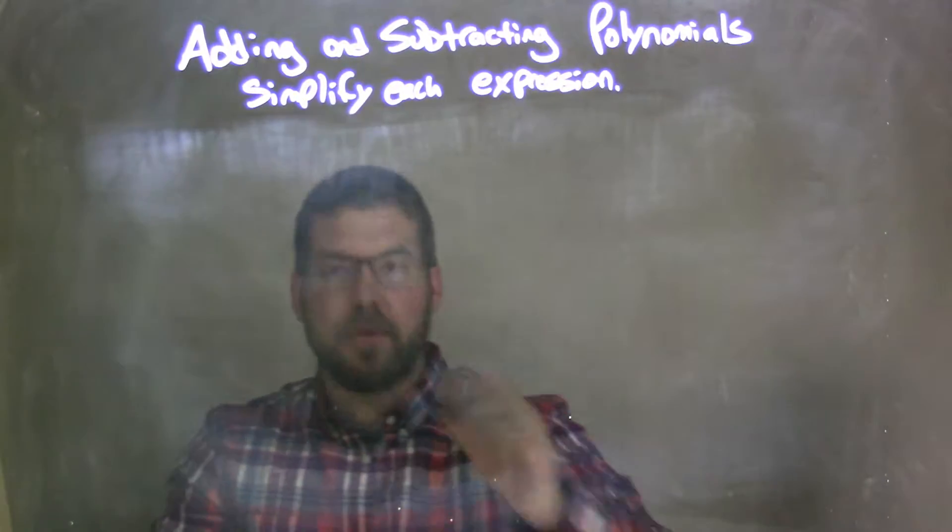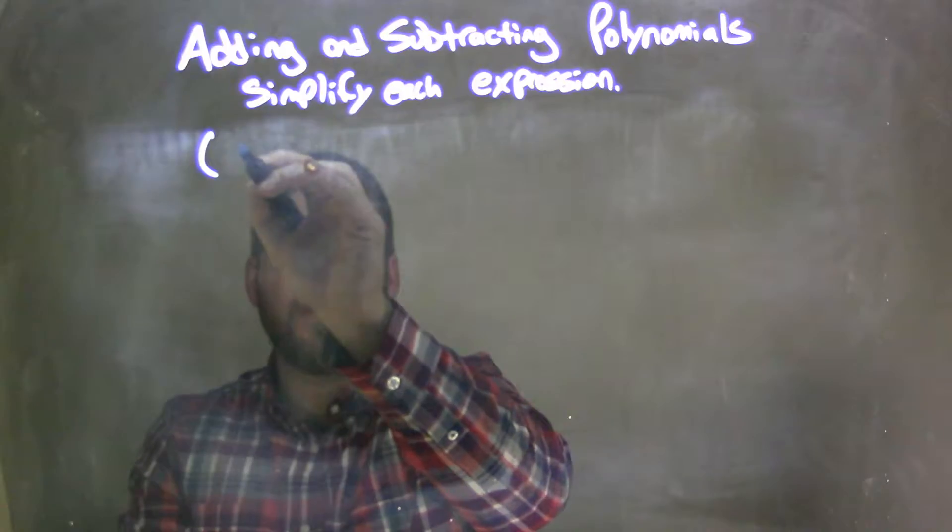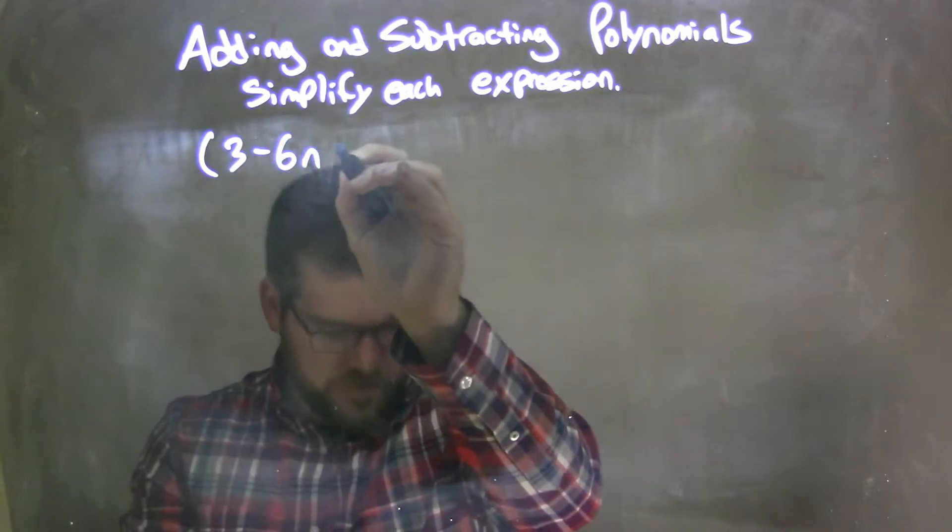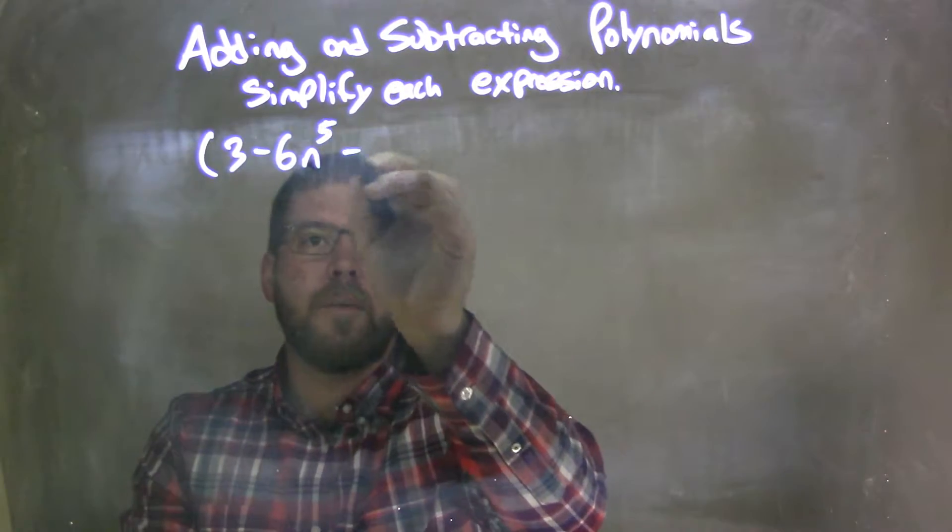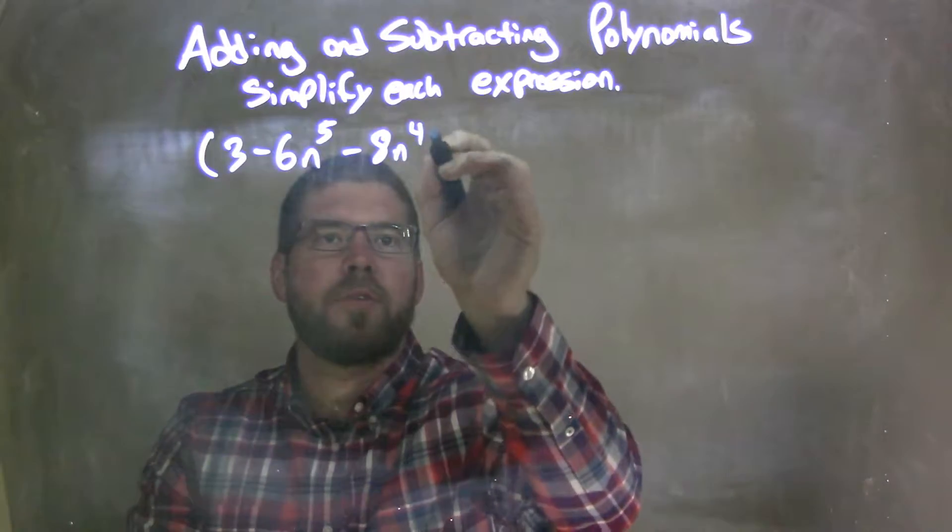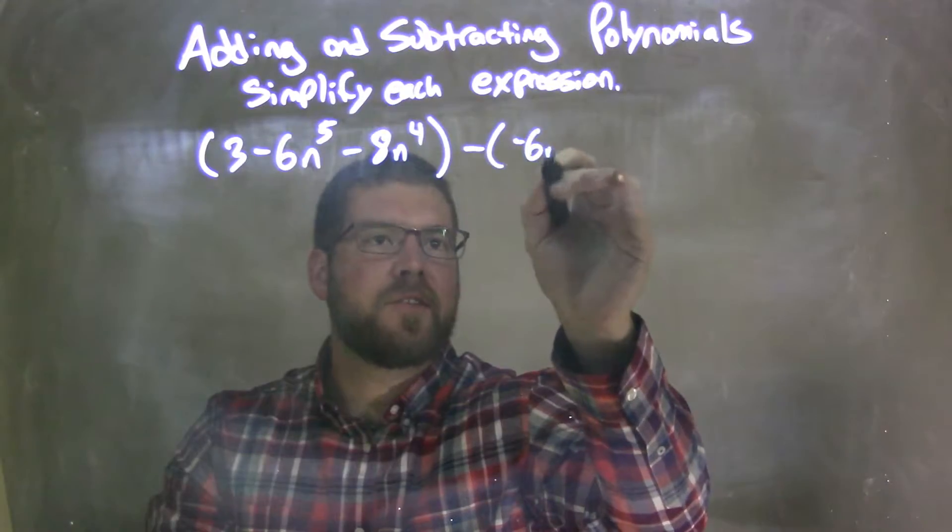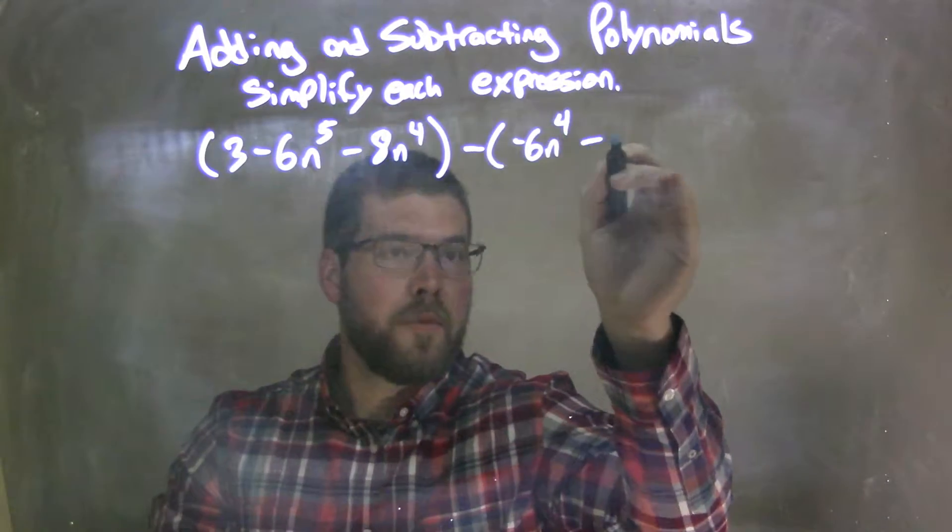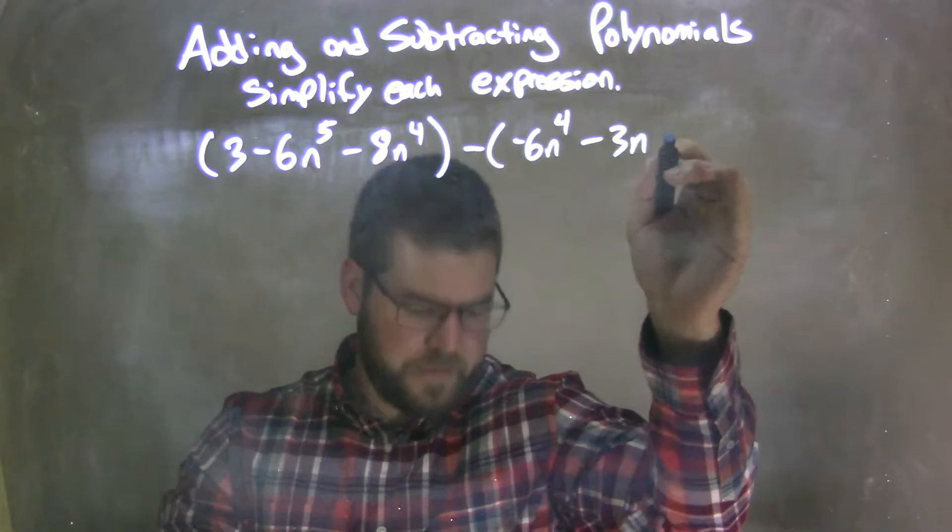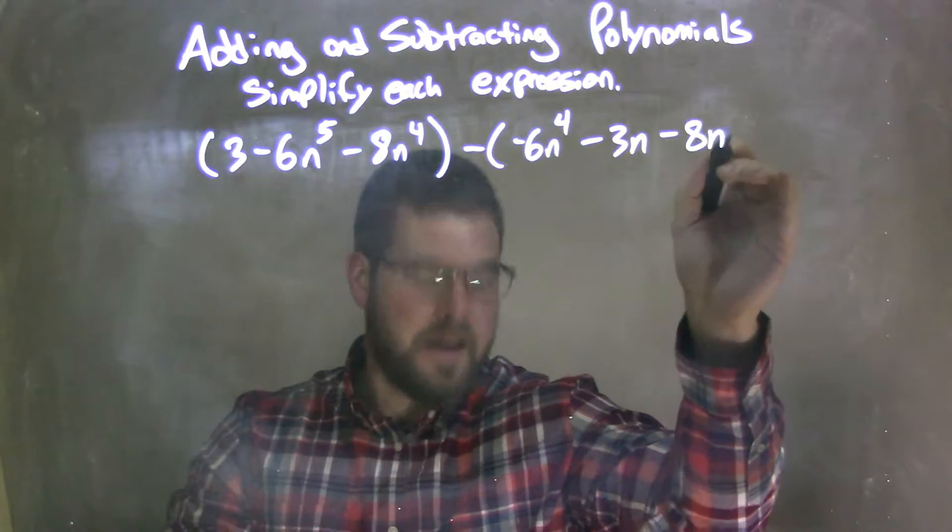So if I was given this polynomial: 3 minus 6n to the 5th minus 8n to the 4th minus parentheses negative 6n to the 4th minus 3n minus 8n to the 5th.